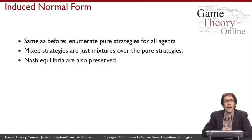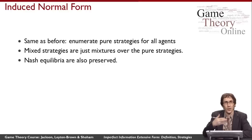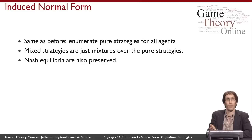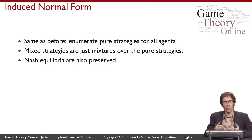Once we have the matrix, mixed strategies are exactly as before — just the mixed strategies of the induced normal form. Best response and Nash equilibrium for imperfect information extensive form games also leverage the induced normal form directly, so all the concepts from normal form games carry over. From Nash's theorem, a Nash equilibrium always exists for every imperfect information extensive form game, since we can produce a finite normal form game from it. The transformation can make the game exponentially bigger, but for questions like equilibrium existence, that doesn't matter.